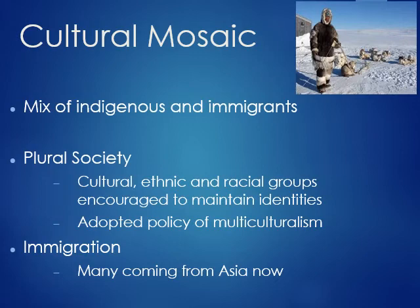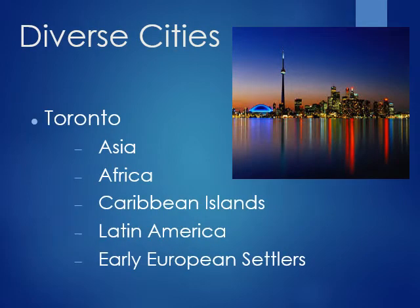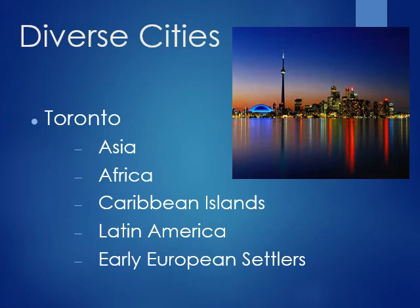Over half of the people currently immigrating into Canada are coming from Asia. There are many diverse cities in Canada because they're taking in so many cultures. The most diverse and also the largest city in Canada is Toronto, which has people from Asia, Africa, the Caribbean Islands, Latin America, and early European settlers — people from four of the seven continents. More than half of students in Toronto speak a language other than English at home, meaning the English-speaking majority is less than 50%.